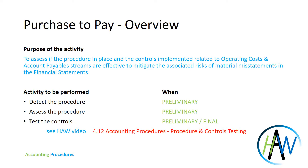Then you have a third point: to test the implementation and effectiveness of the controls in place, and this activity is performed generally during preliminary but also during the final phase. This is because you have to cover the full period of the audit, to make sure that controls are implemented during the whole period.